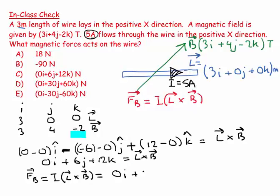Which equals I L cross B, is equal to 5 times this. So 0i plus 30j plus 60k. And the units? Well, it's a force, so that's going to be in newtons.